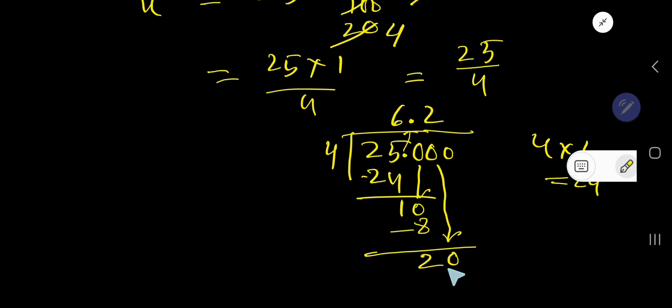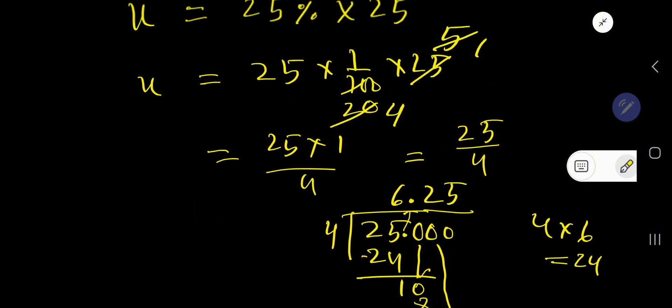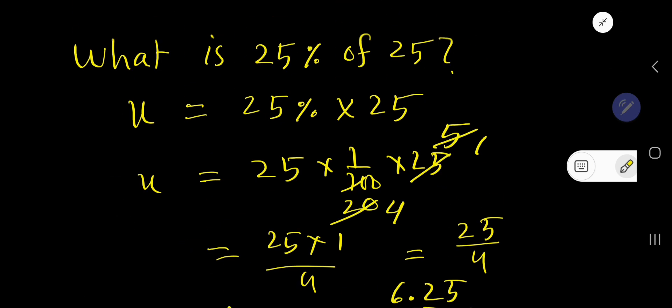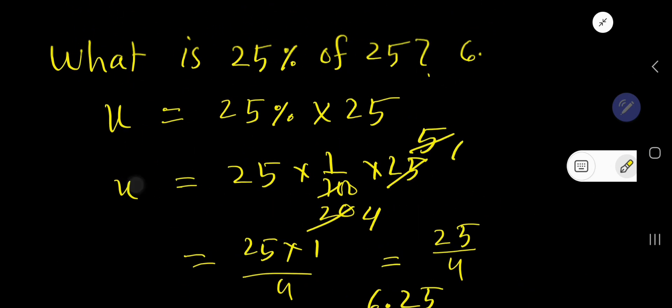4 goes into 20, 5 times. 5 times 4 is 20. So we have gotten 6.25, and this is the answer. What is 25% of 25? 6.25.